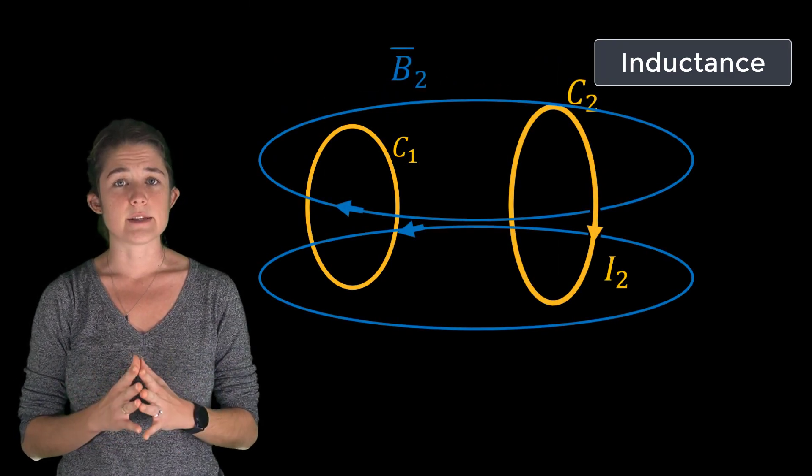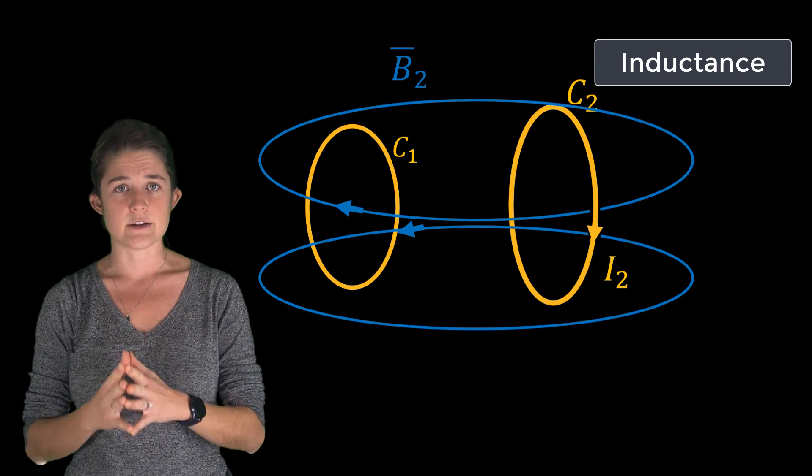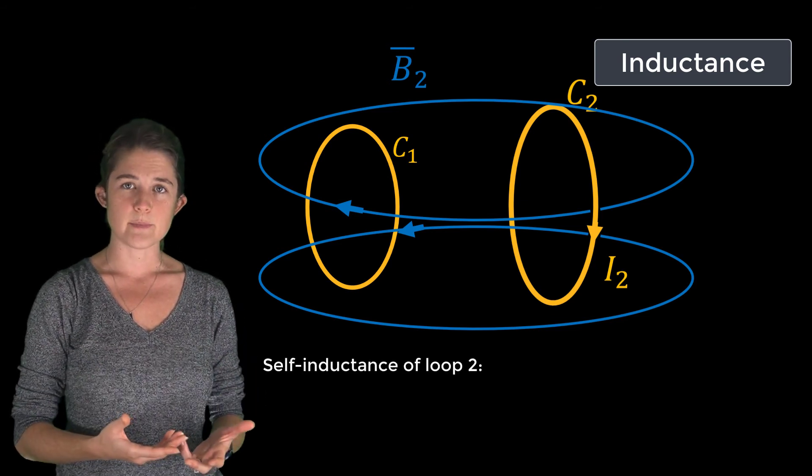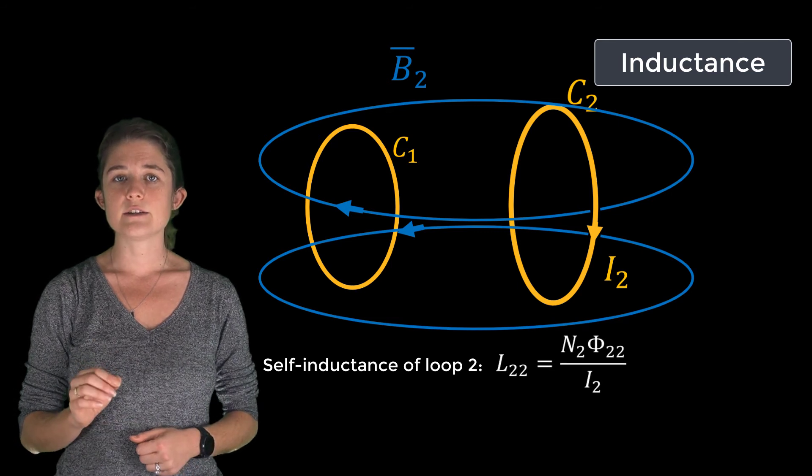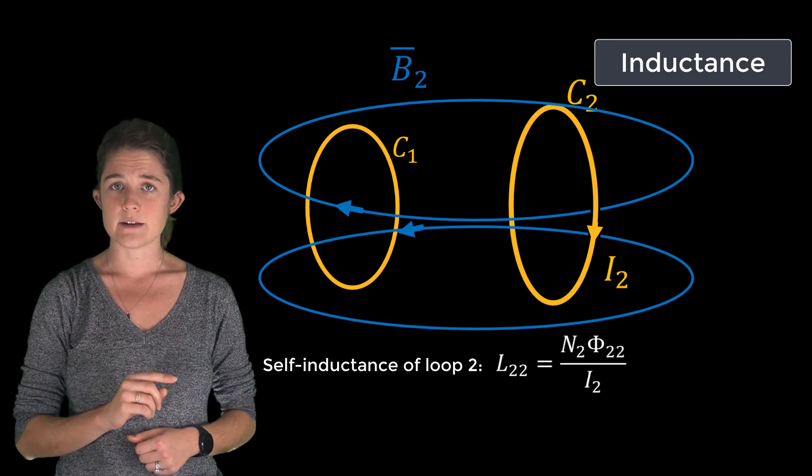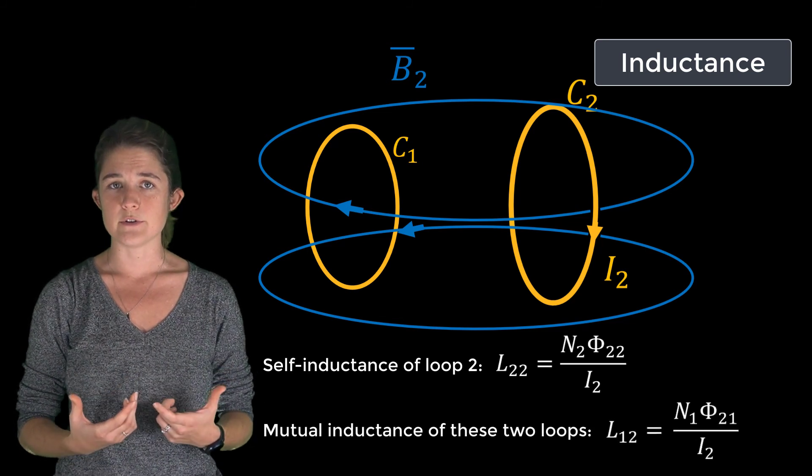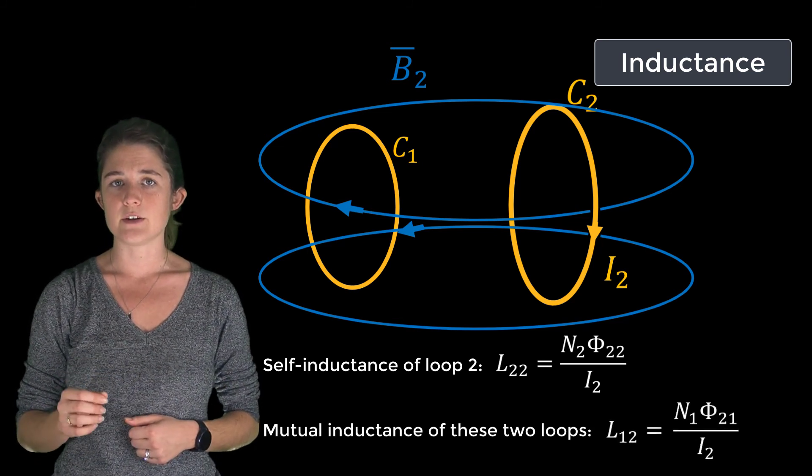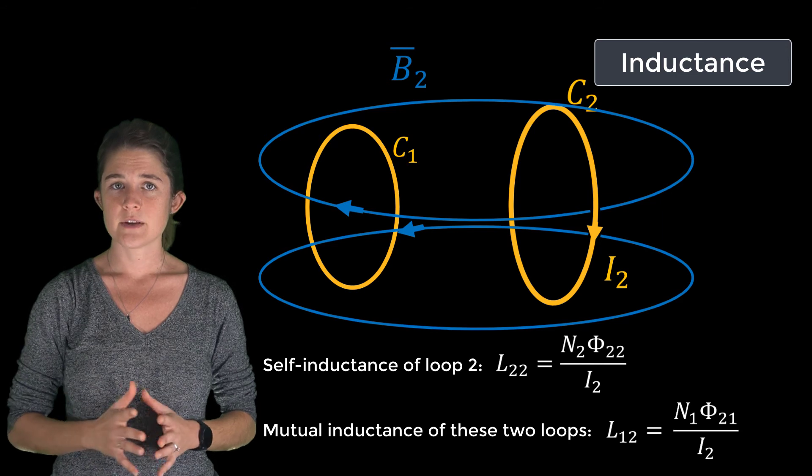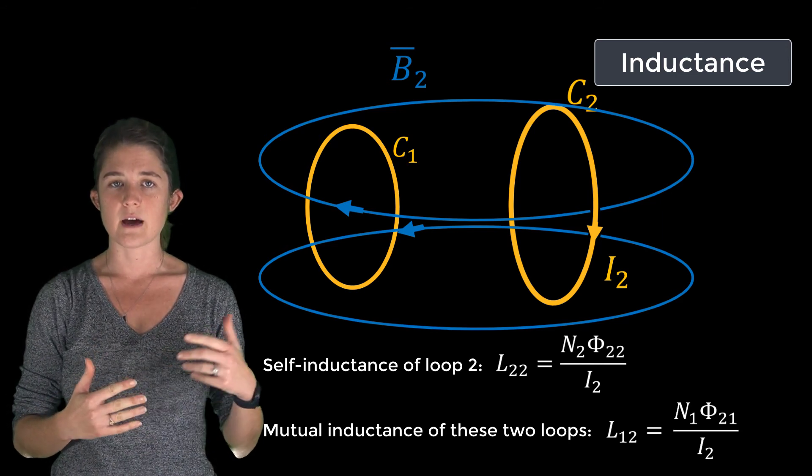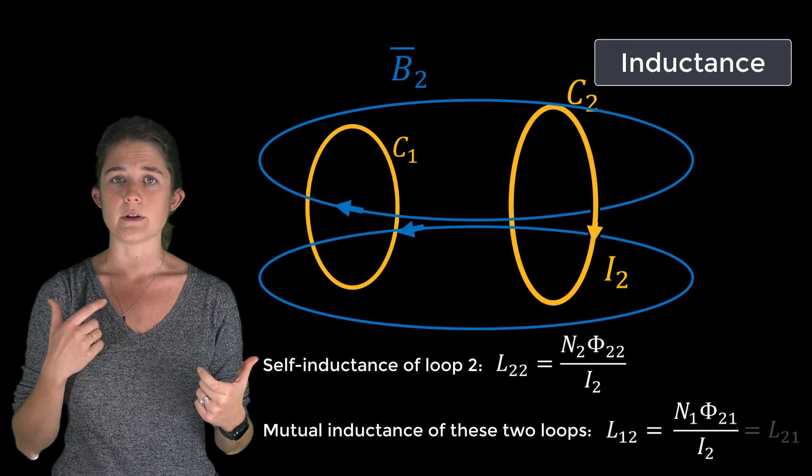We also consider the case where the second loop is driven by a current I2. Here we may obtain the self-inductance of the second loop, L22, as N2Φ22 over I2, and the mutual inductance between the two loops as N1Φ21 over I2. Note that the mutual inductances must be equal: L12 will always equal L21.